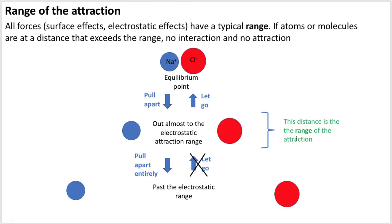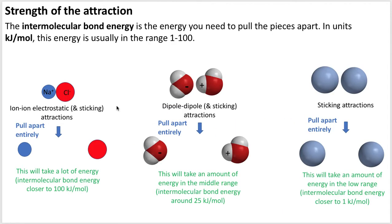Another important concept is the range of attraction. All forces — surface effects and electrostatic effects — have a typical range. Imagining sodium and chloride at their equilibrium point: if you pull them apart to nearly the edge of the electrostatic attraction range and let go, they return to equilibrium. The distance at which they still pull back is the range. If you pull them even farther past that range, they no longer sense each other and separate entirely.